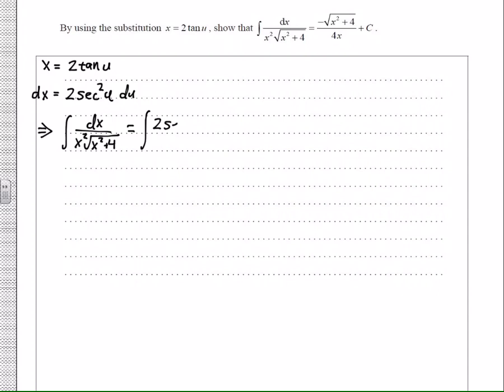I can now write 2 secant squared u du because this dx became all this. And then the x squared is just going to become 4 tangent squared u, and then the square root of 4 plus 4 tangent squared u. That's the 4 right there.